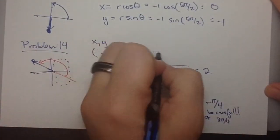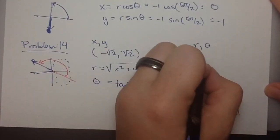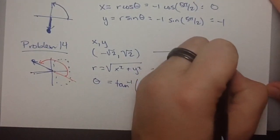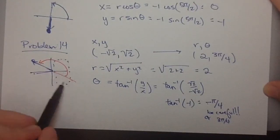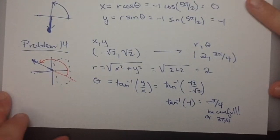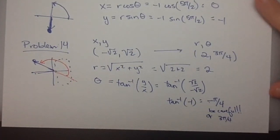So then going to r and theta, the radius is 2 and the angle is 3 pi over 4. So be careful. Because remember, your calculator will lie. So that's problem 14. I think that's all we're going to do for this one. Thanks guys.